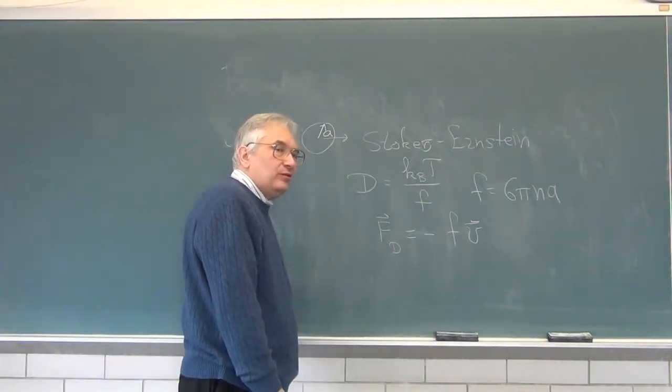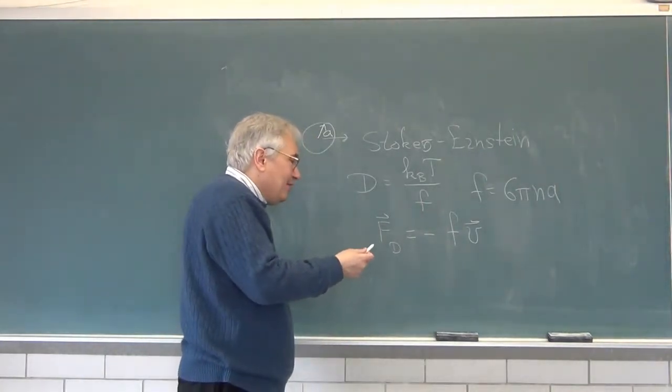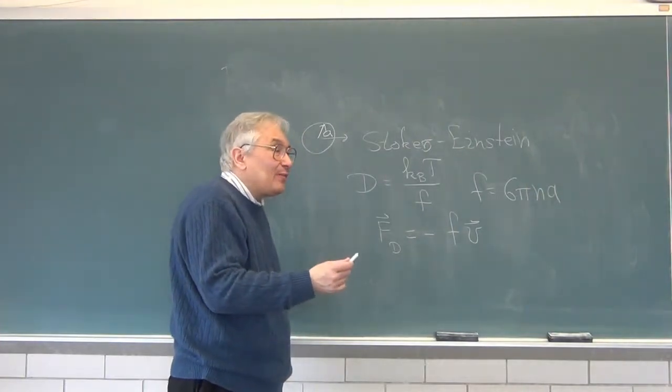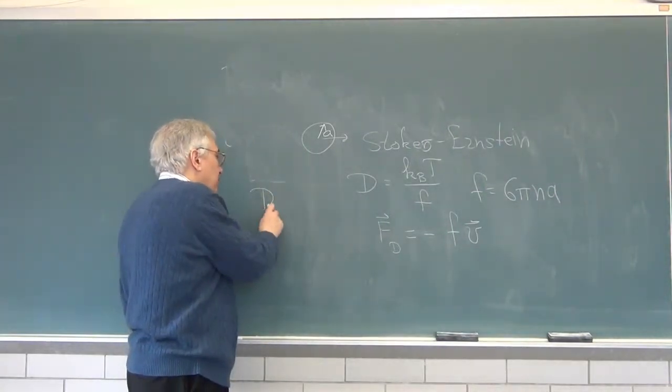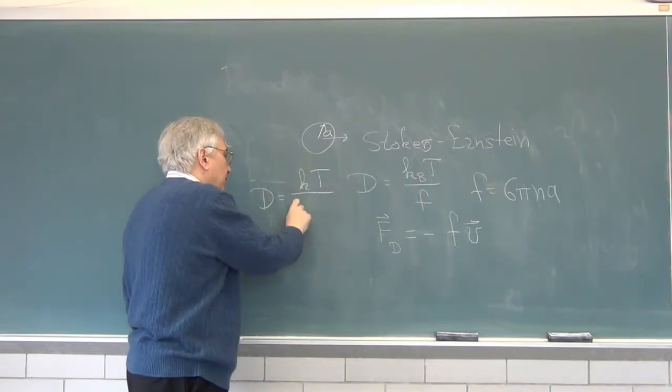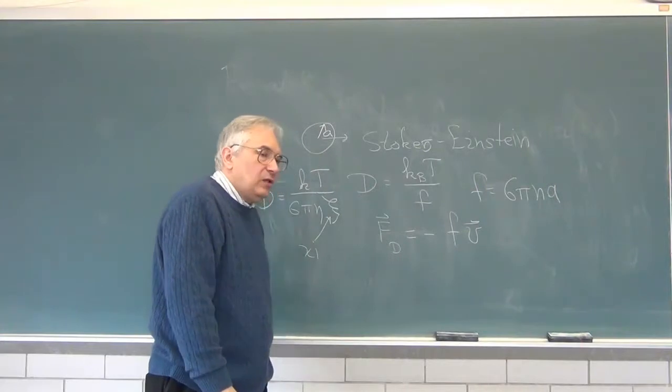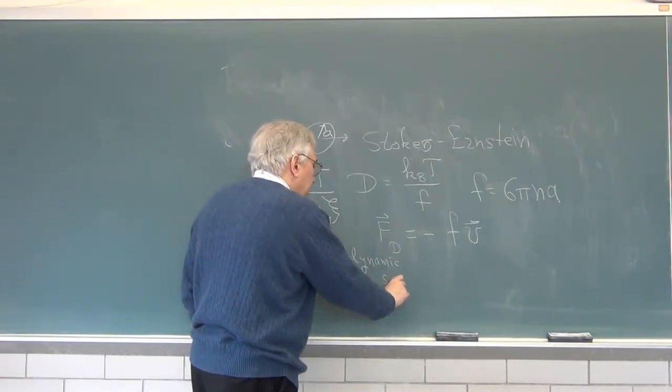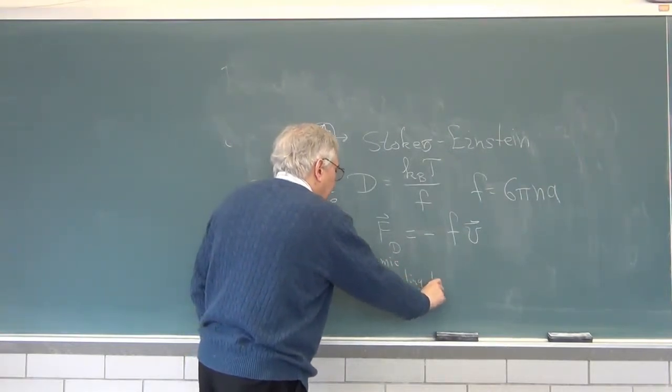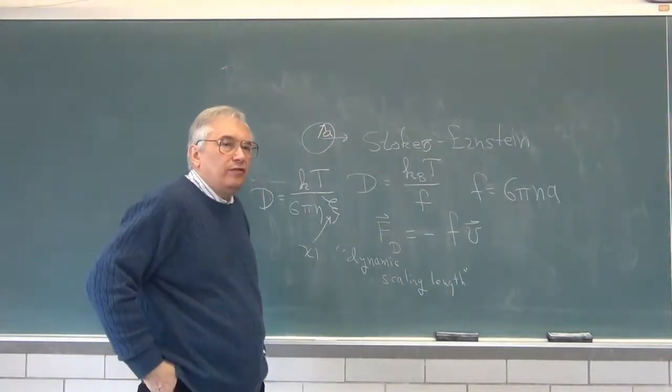Now, suppose, however, you have a solution that is not dilute. What happens? There are people who will say you can write the diffusion coefficient as kt divided by 6 pi eta, and they put in psi, what is called a dynamic scaling length.